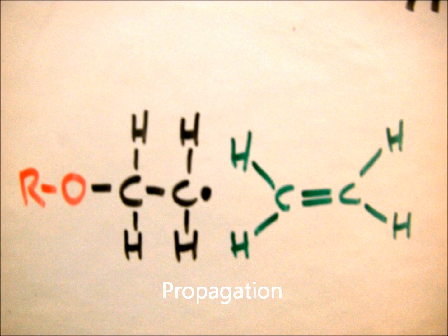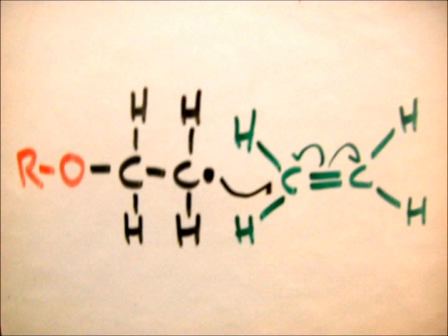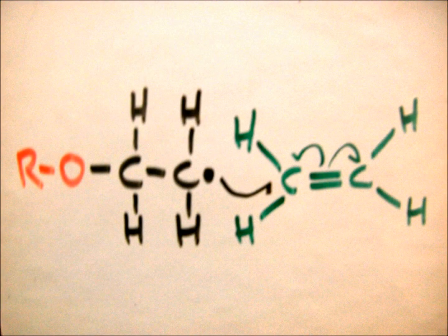Propagation then occurs. This is when the terminal radical reacts with another monomer, adding it to the chain and creating another radical, as shown here.